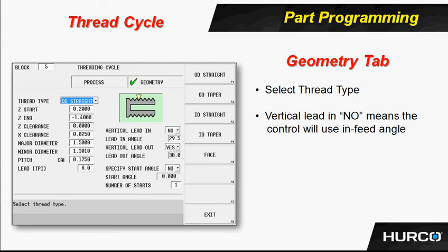The pitch, in this case, was calculated as 0.125 because we entered the lead — or threads per inch of eight — which calculated the pitch. We could have entered the pitch, and it would have calculated the lead.